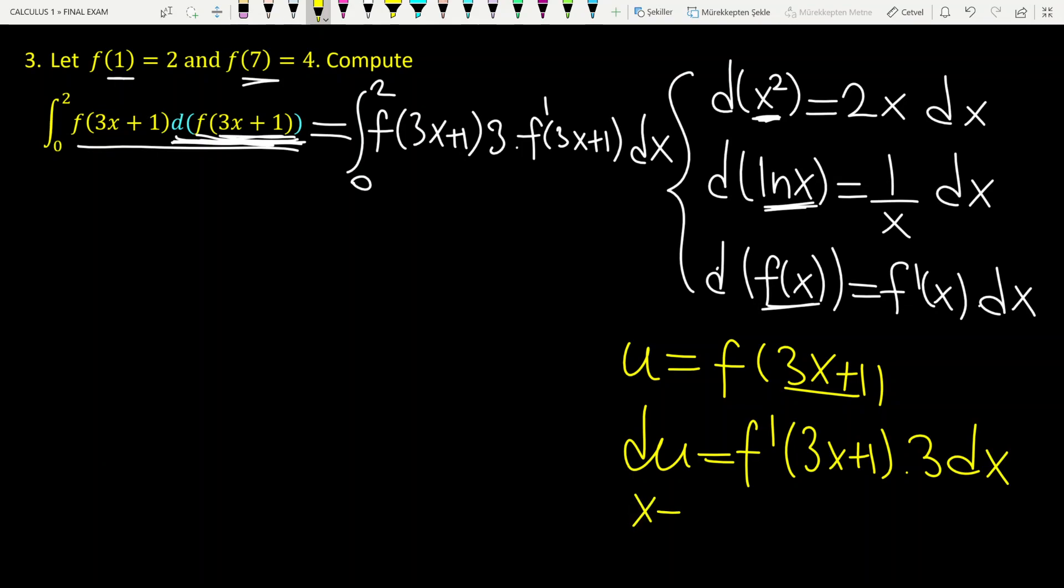When x equals 0, for the lower boundary of integration, u is equal to f of 1, which is 2. And when x is equal to 2, u is equal to f of 7, which is 4. This is also given in the question.